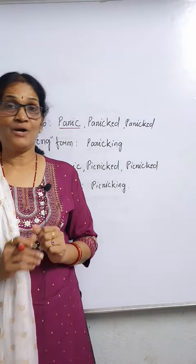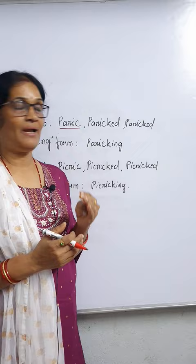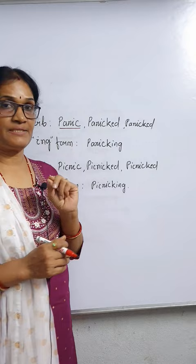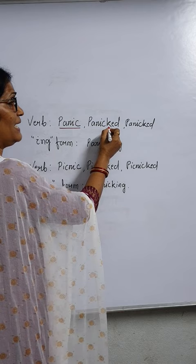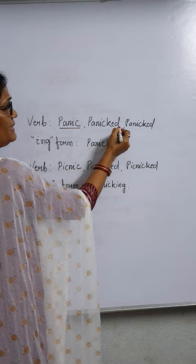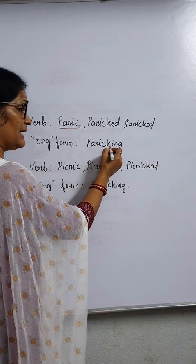Let's learn how to change the word into past participle and -ing form. 'Panic' is one adjective. When you use it as a verb, its past form will be 'panicked' — K is added. The last letters are I plus C, so K is added and then ED: panicked. The same applies to the -ing form: we add K-I-N-G, giving us 'panicking'.